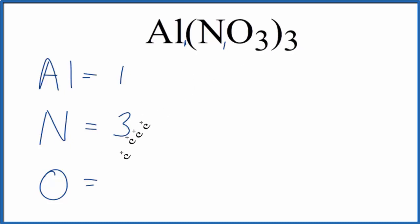Three times the three, that'll give us nine oxygen atoms. So these are the atoms that are in this aluminum nitrate. If we want to know the total number of atoms in Al(NO₃)₃, we just add these up. Nine plus three, that would be twelve, plus one, thirteen. So a total of thirteen atoms in aluminum nitrate.